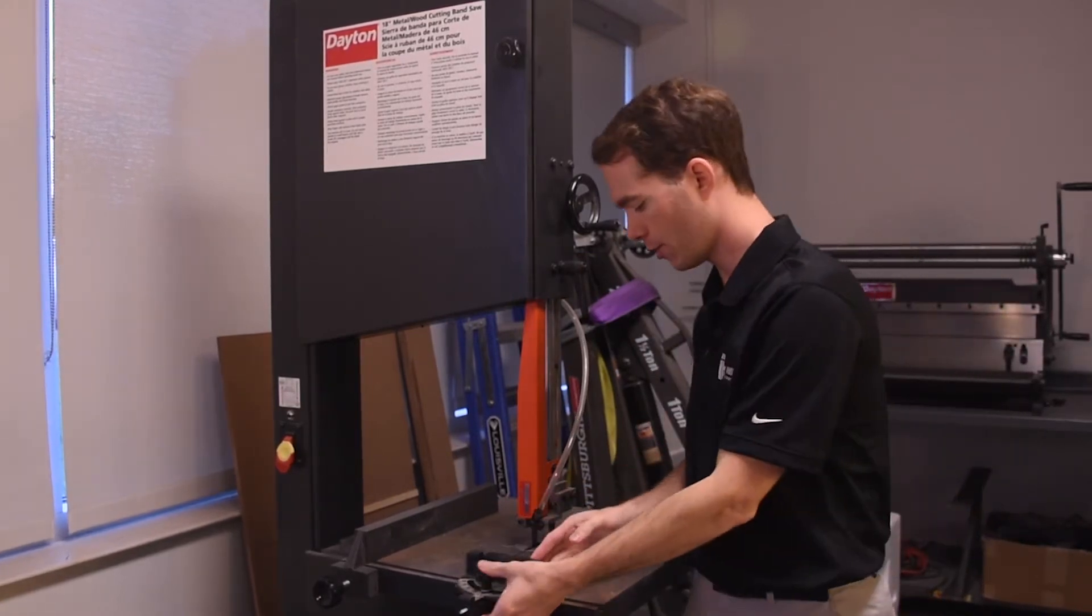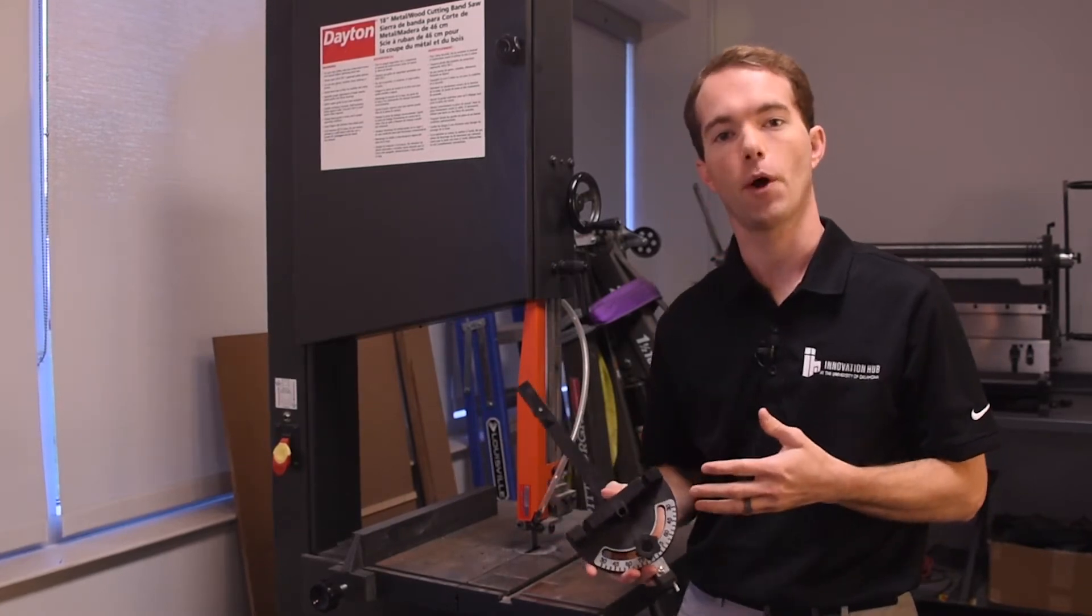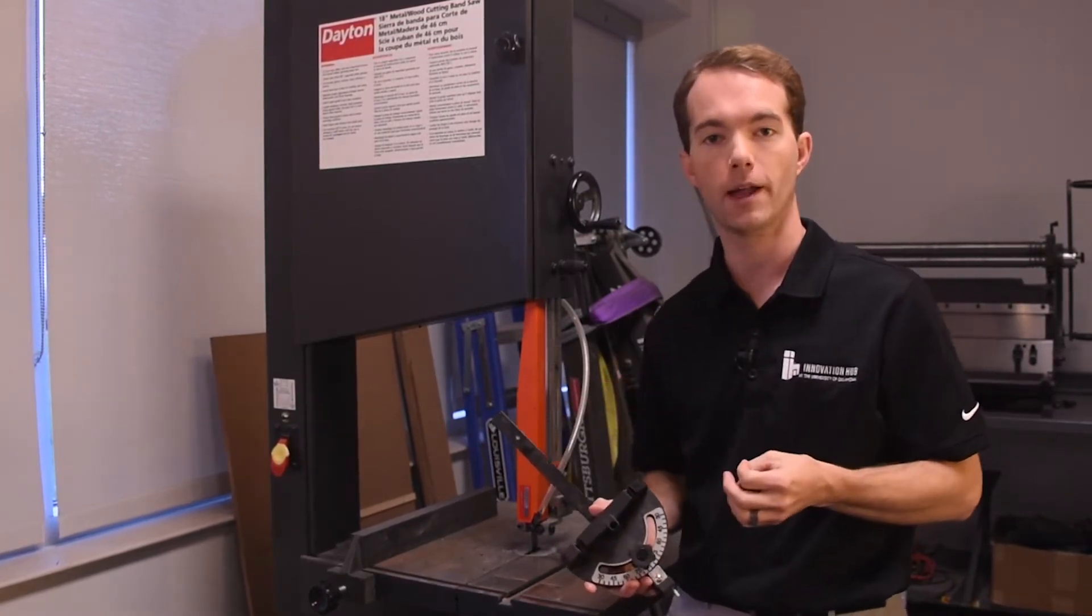Here we have a miter gauge, just like a lot of the other tools in the shop. You'd use this if you wanted to cut an angle on this bandsaw. Although if you wanted to cut an angle, a lot of times you'd use the chop saw and set it instead.